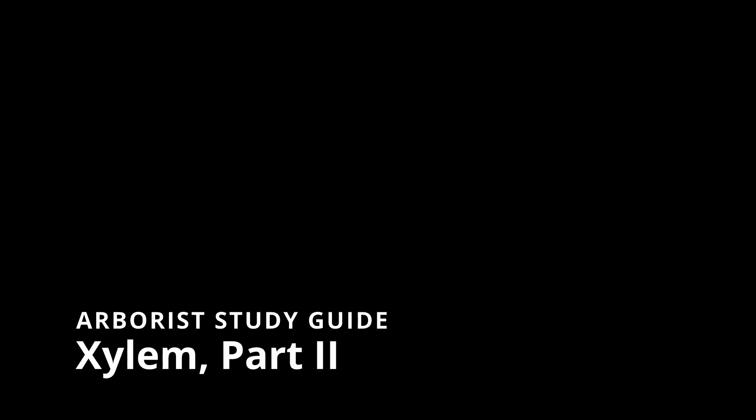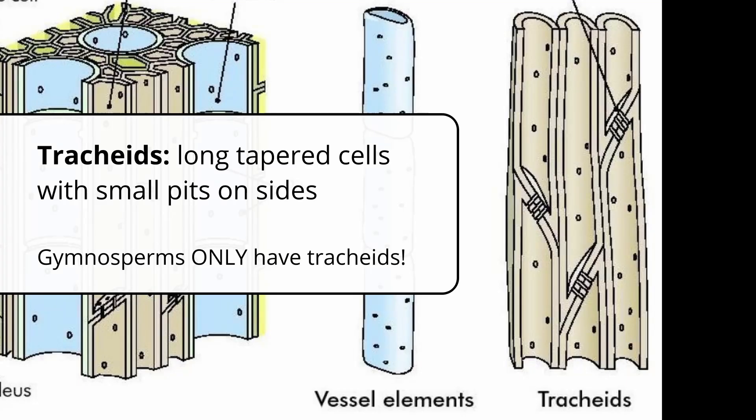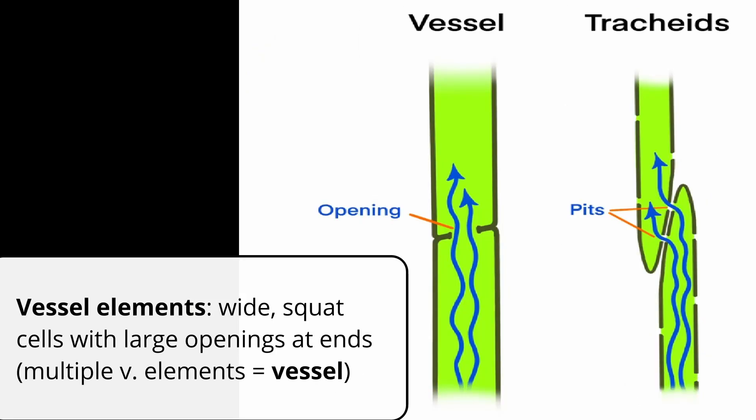This video is the second video of a two-part series on xylem. The first part covered what xylem was, the different transport cell types, and different terms associated with xylem. As a quick review, there are two main types of transporting tissues in the xylem: tracheids and vessel elements. Tracheids are found in both angiosperms and gymnosperms, but vessel elements, which are shorter and squatter, are found only in angiosperms.